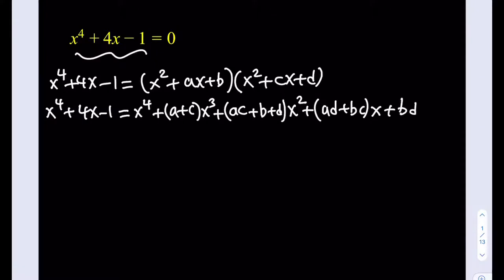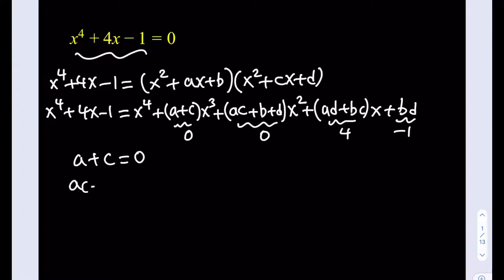These two polynomials are going to equal each other for every x, meaning we can determine the coefficients. There's no x cubed term, so a plus c equals zero. There's no x squared, so ac plus b plus d equals zero. The coefficient of x is 4, so ad plus bc equals 4. And our constant is negative one, so bd equals negative one. We are looking for values of a, b, c, d — they may or may not be integers.